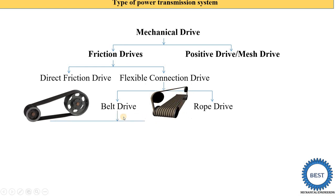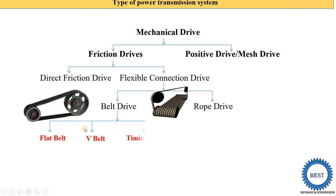In a belt drive there are a number of options. If we use a flat belt, it is called flat belt drive. If the belt shape in cross-section is V-shaped, it is called V belt. According to the section view: if the section is flat it is called flat belt; if the section looks like a V shape it is called V belt. There is also a timing belt — when viewed from the side, various V shapes are visible, so it is called a timing belt.